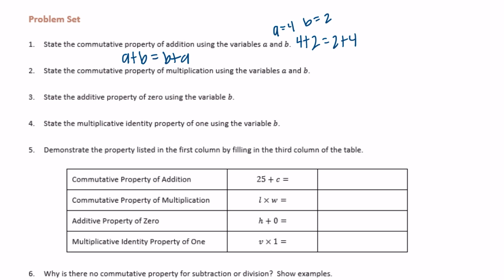State the commutative property of multiplication using the variables a and b. Same thing, like we're doing four times two equals two times four. So if a is four and b is two, we can say a times b equals b times a.